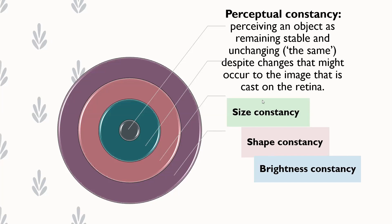Remember: perceptual refers to your feelings, sensations, and your ability to perceive those sensations. Constancy refers to something remaining constant, unchanging, or the same.